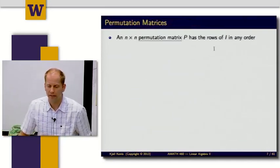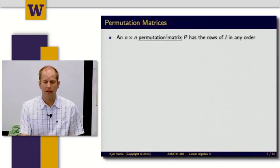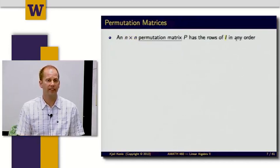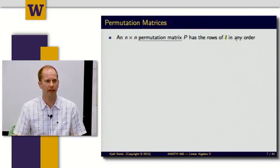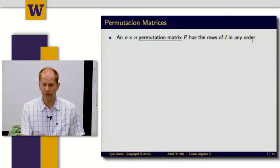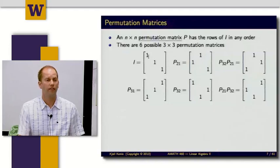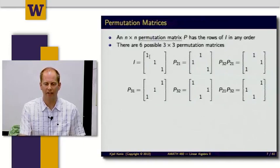The second type of matrix I want to talk about is a permutation matrix. A permutation matrix is square — an N by N permutation matrix P has the rows of the identity matrix I, but in any order. The identity matrix has its rows in their natural positions, and if I shuffle those rows around in any way, the matrix I end up with is a permutation matrix.